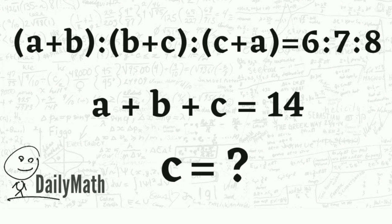The ratio of a plus b to b plus c to c plus a is equal to 6 to 7 to 8. And also we have a plus b plus c equals 14. Now try to find c.